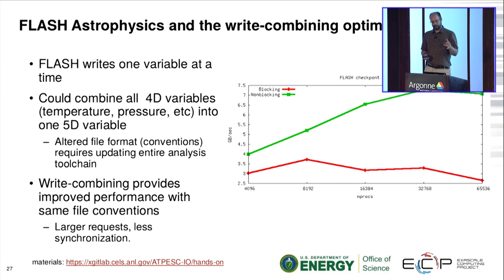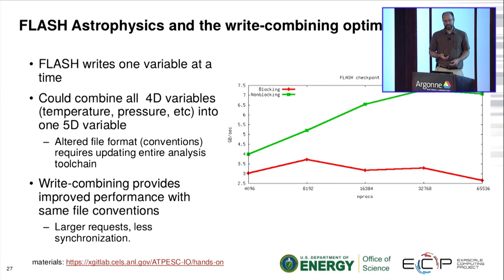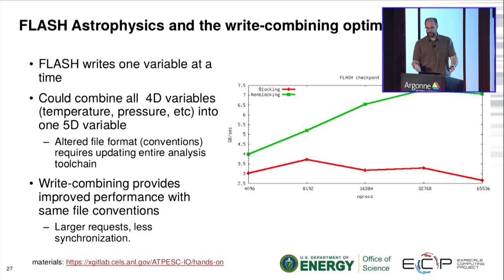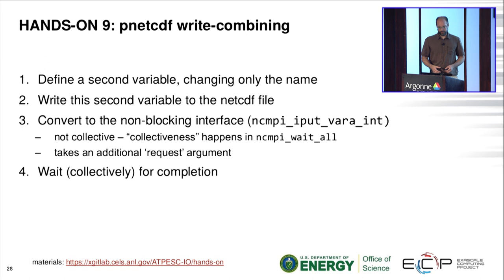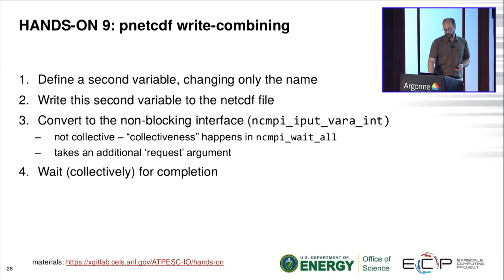The full story: the Flash group came to us with bad performance. We suggested that instead of writing 27 4D variables separately, they could add a fifth dimension as a variable identifier and write all 27 as one big array for better performance. They tried it and it worked. But changing the file format would require updating visualization and analysis tools across an entire ecosystem - they're on version 14 and don't want to make that change arbitrarily. So instead, we used the non-blocking interface to get the same performance jump while maintaining the existing file layout.